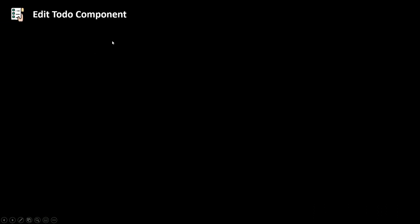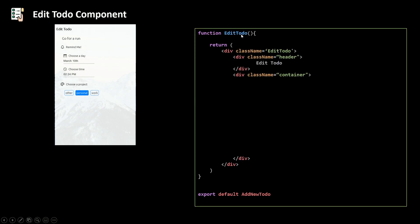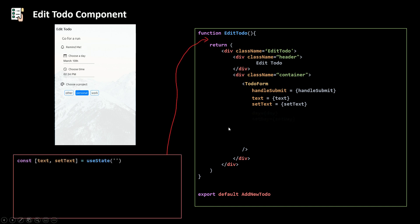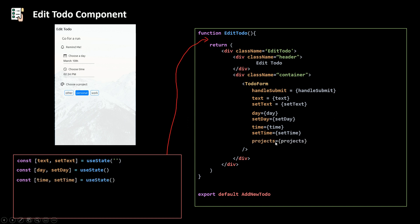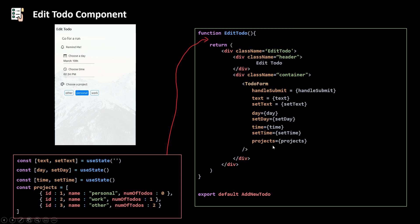Now for our edit to-do component it's going to be almost the same. We need a function called editTodo, a header 'edit to-do', and inside a div with class name 'container' we render our TodoForm. Here we pass handleSubmit, but we don't pass a hidden so it defaults to false and we won't render an h3 tag. We pass text and setText, day and setDay, time and setTime, and the projects array. We're not showing buttons so we don't pass showButtons or setShowModal — they default to false. The code for edit to-do is now much cleaner.